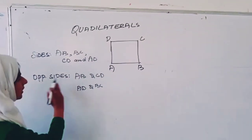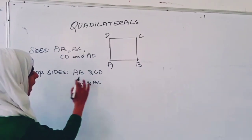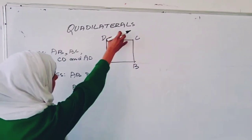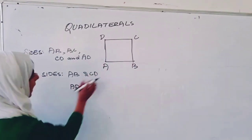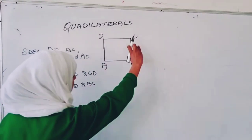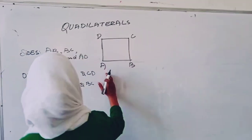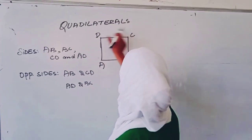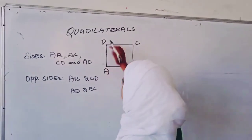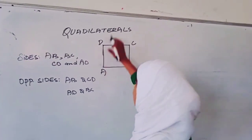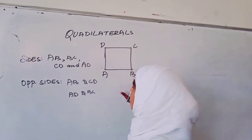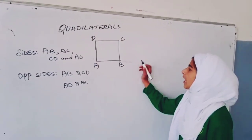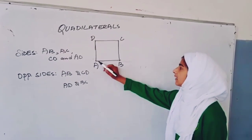The opposite sides are: AB is opposite to CD, and AD is opposite to BC. A quadrilateral also has four angles: angle A, angle B, angle C, and angle D.